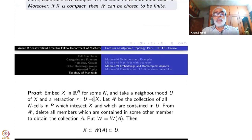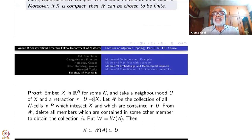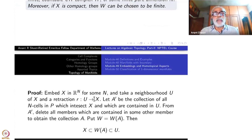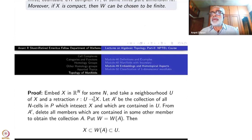Now go back to the CW complex structure given by the lattice structures. Let A' be the collection of all n-cells in the lattice which intersect X and which are contained in U. From A', delete all members which are contained in some other member already — once a big cube is taken, no smaller cell inside it will be taken.